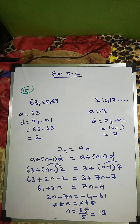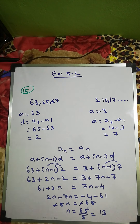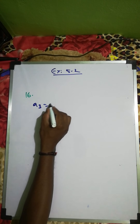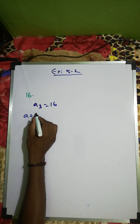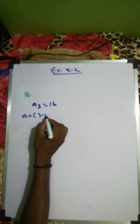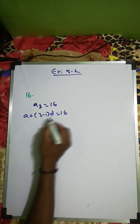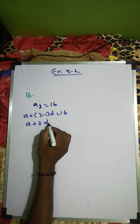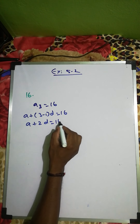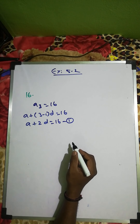Question number 16: determine the AP whose third term is 16 and seventh term exceeds the fifth term by 12. From the third term: a + (3-1)d = 16, so a + 2d = 16. This is equation one.